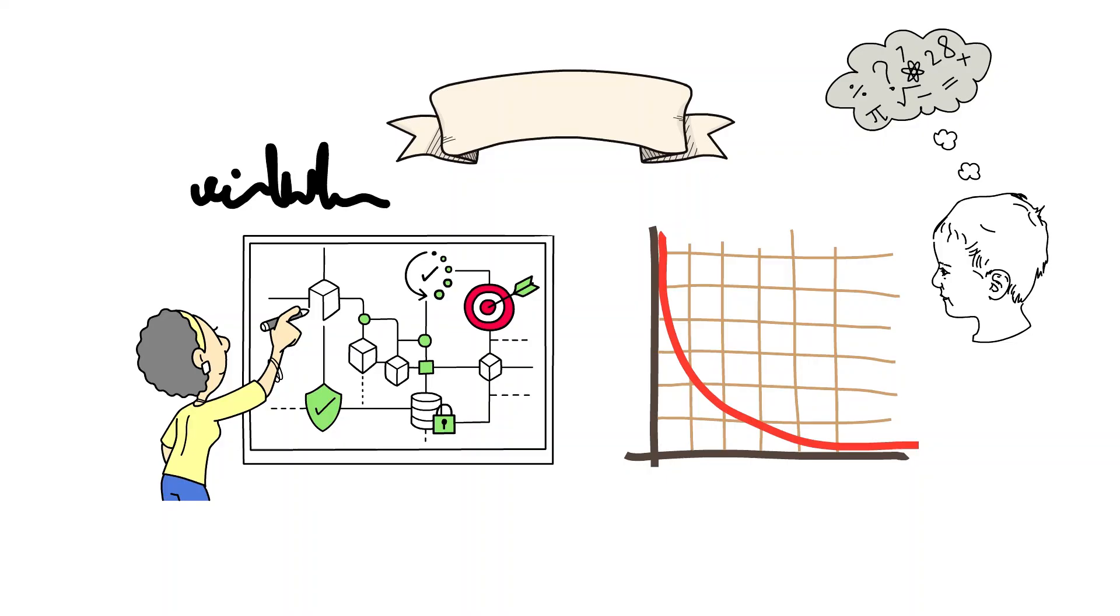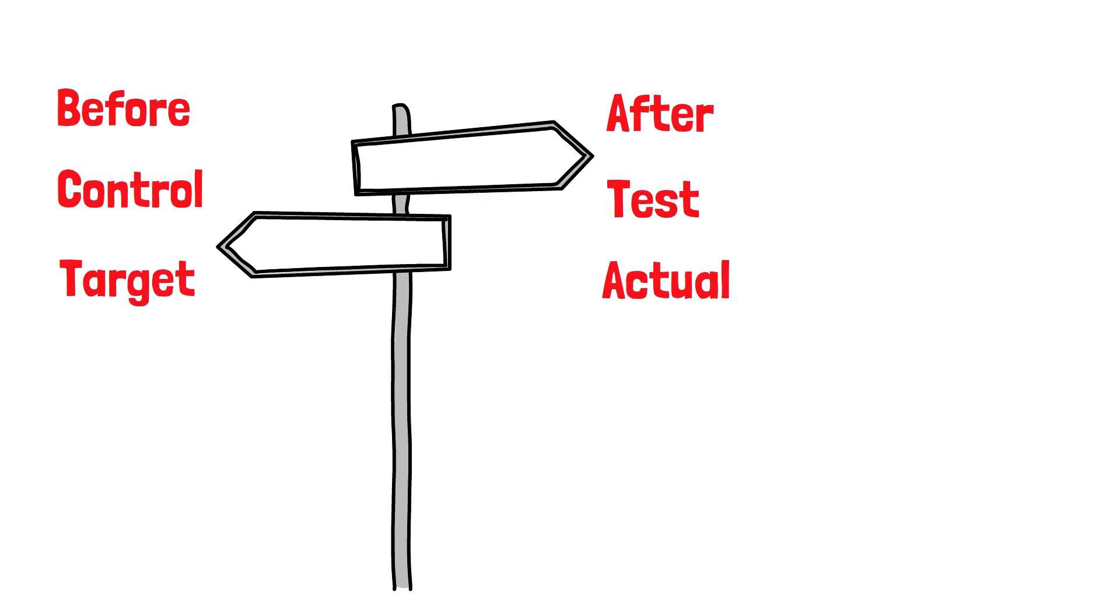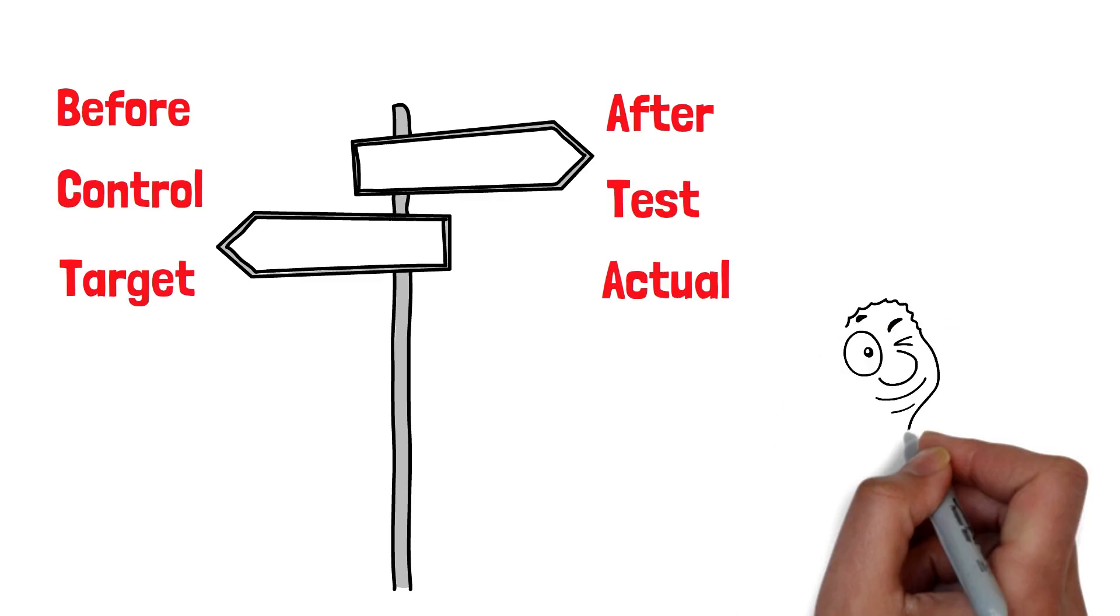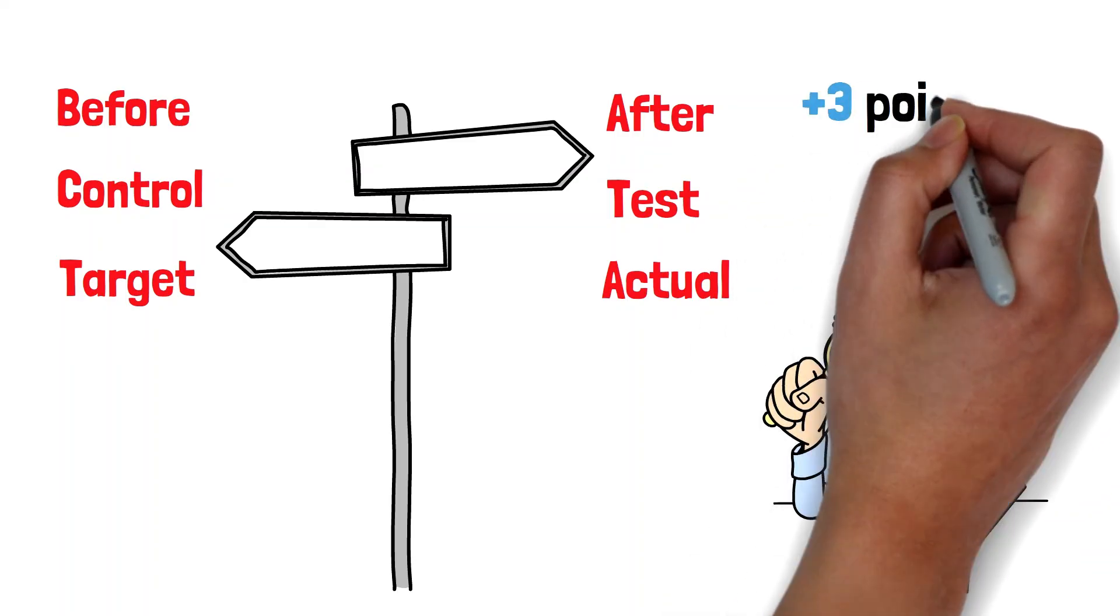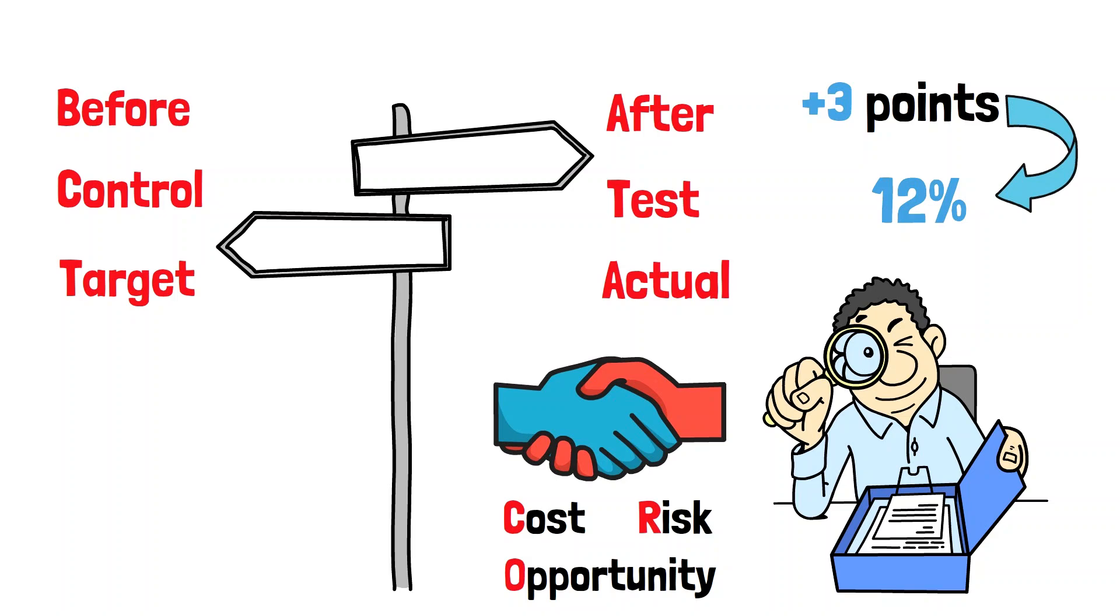Replace jargon with plain language and concrete numbers. Use contrast: before versus after, control versus test, target versus actual, to guide attention. Quantify impact: plus three points retention equals 12% more active users next month. Tie the recommendation to stakes, cost, risk, or opportunity.